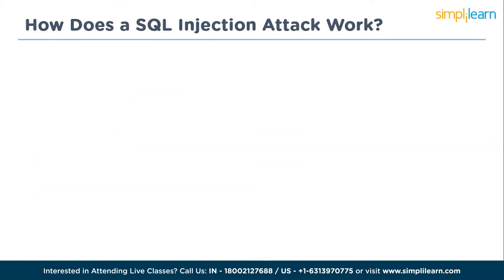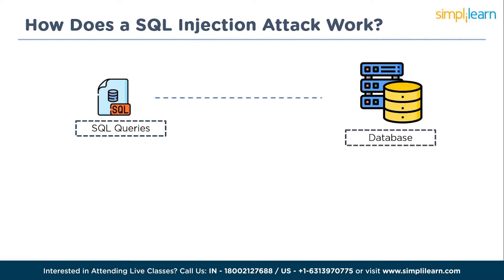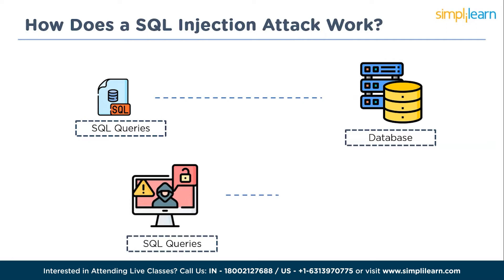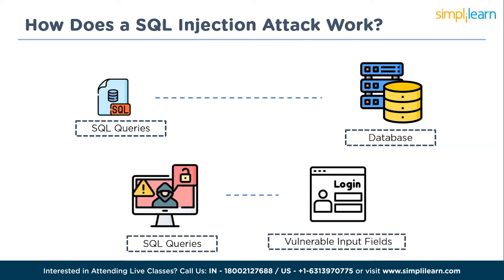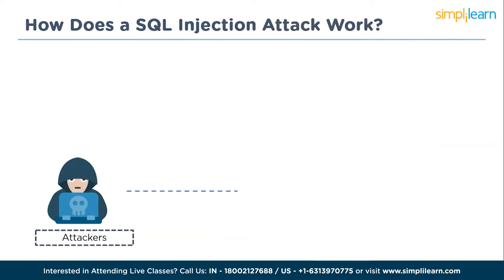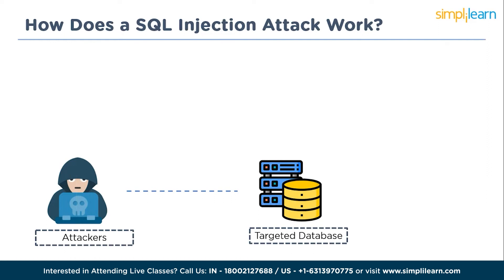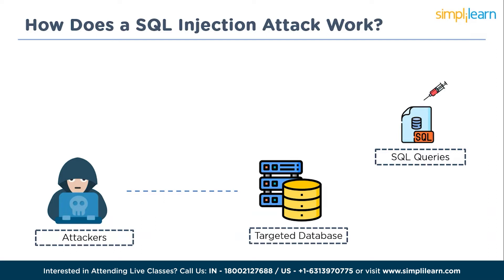To understand how a SQL injection attack works, let's consider how a typical SQL query functions. Queries are used to retrieve or modify data from a database. Attackers exploit vulnerable input fields by injecting malicious SQL code that alters the intended behavior of the query. Attackers first study the targeted database to understand its structure, then craft a SQL query the server interprets as a legitimate command — for example, OR 1=1 — to bypass authentication and gain unauthorized access.